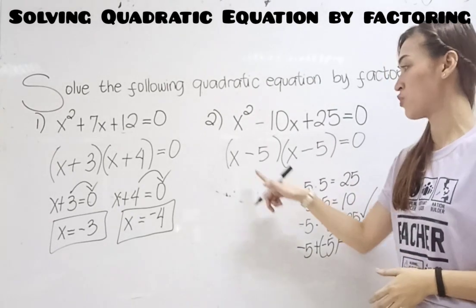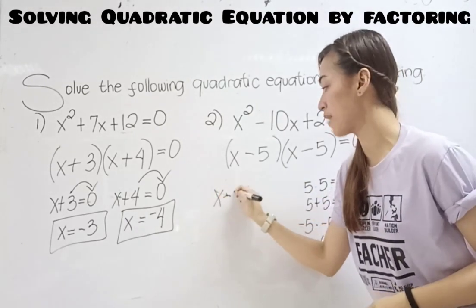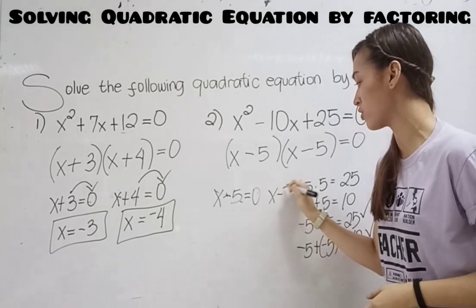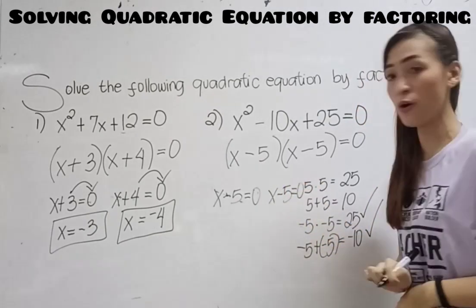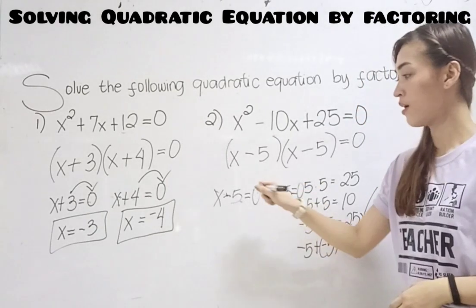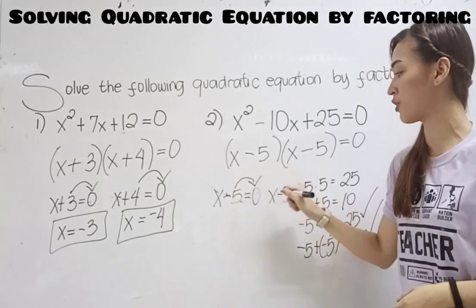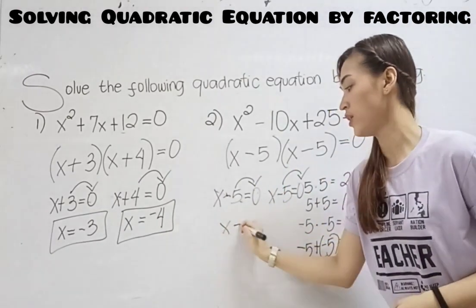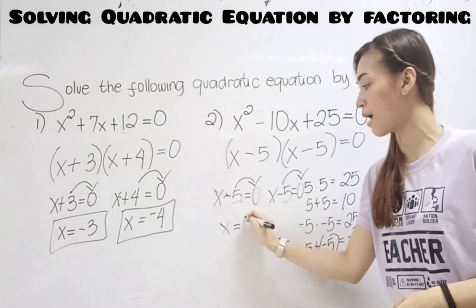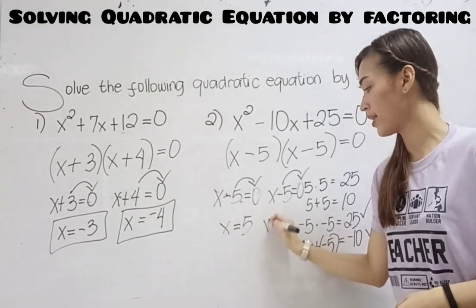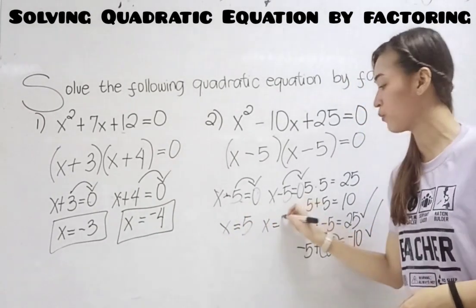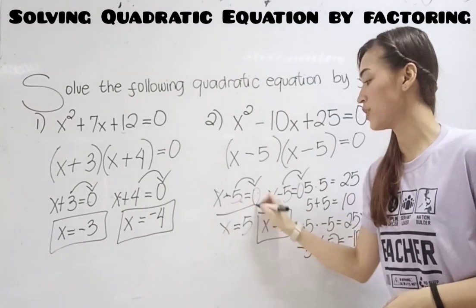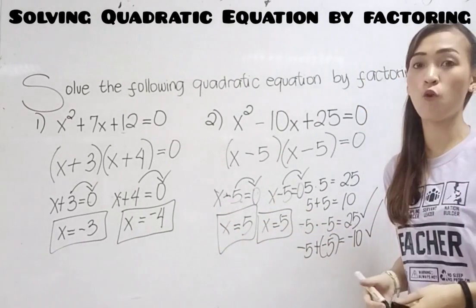After that, we have x minus 5 equals 0, and also x minus 5 equals 0. Transpose negative 5 to the right — it becomes positive 5. So x equals positive 5, and x equals positive 5. The answer is x equals 5.